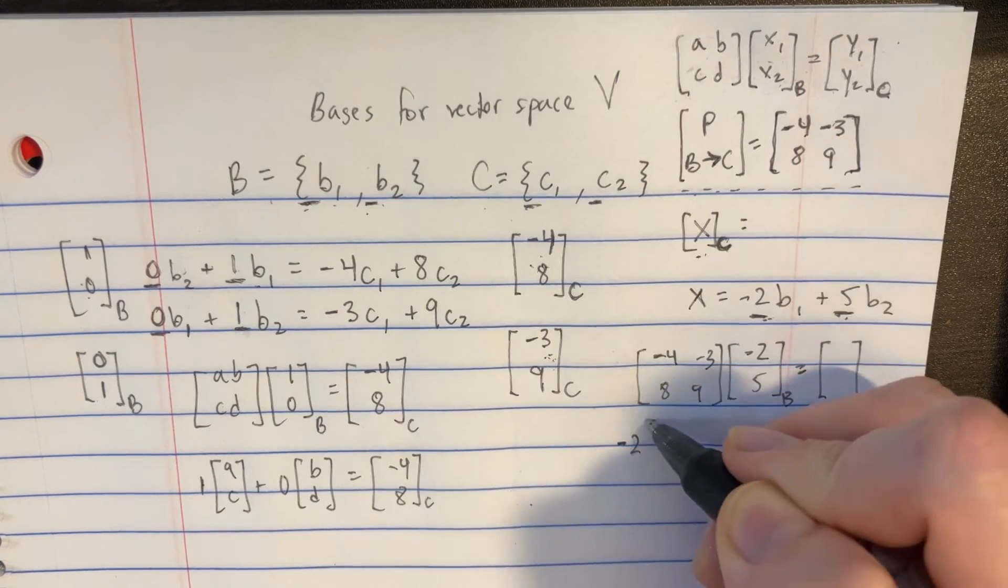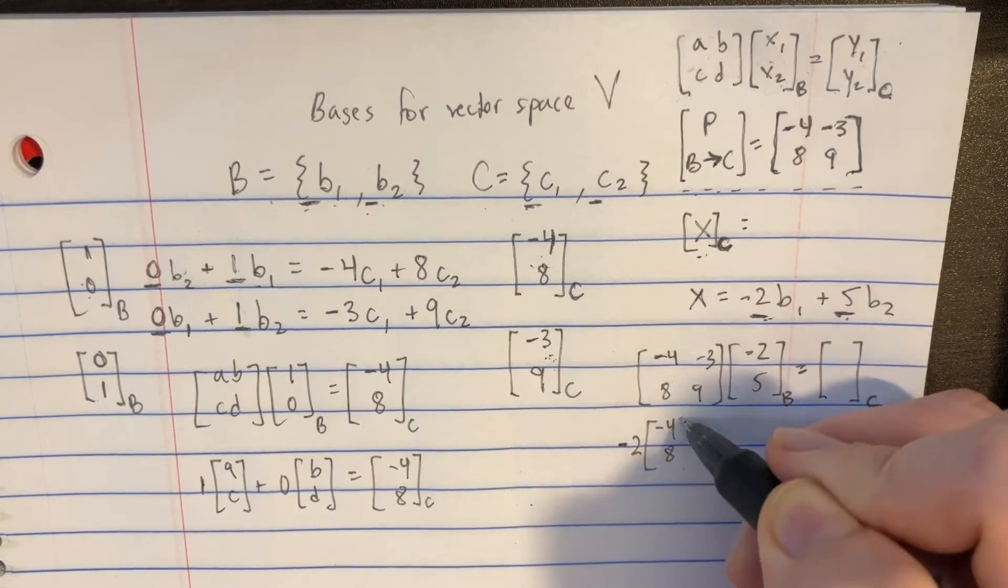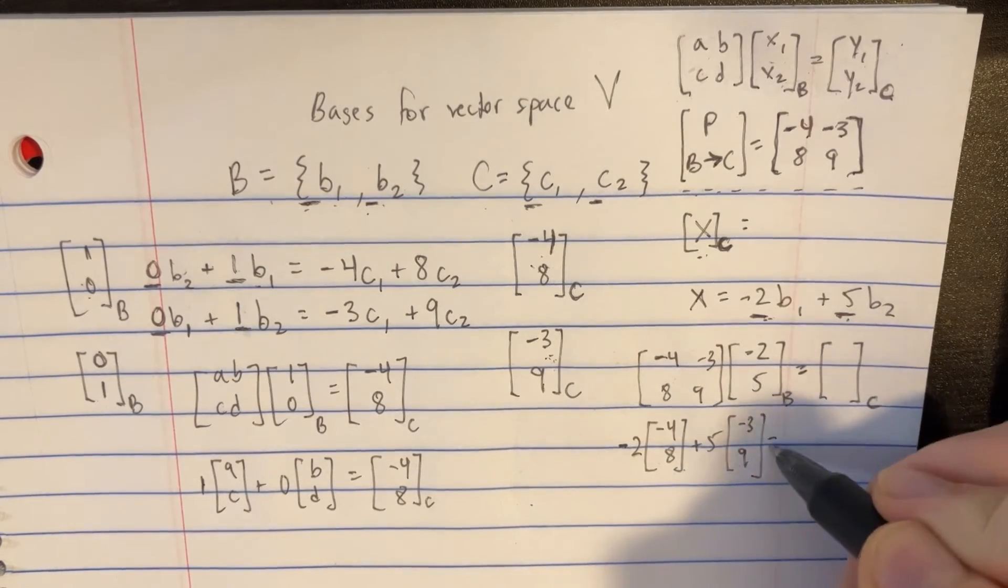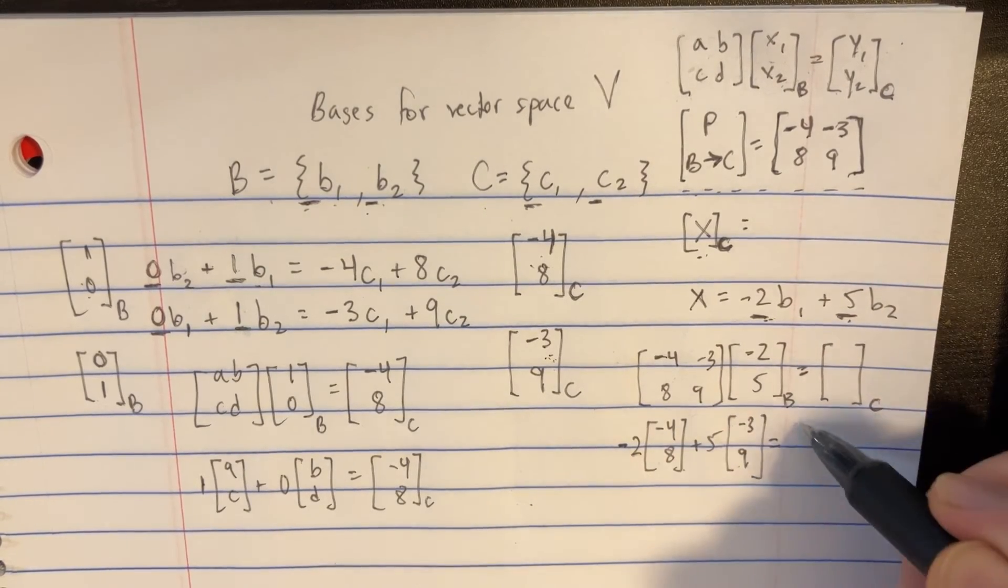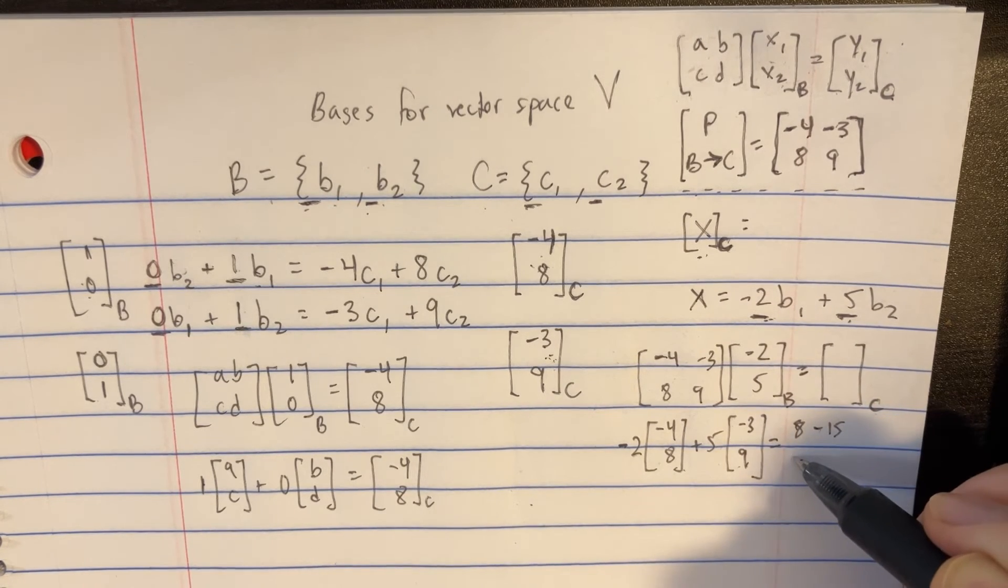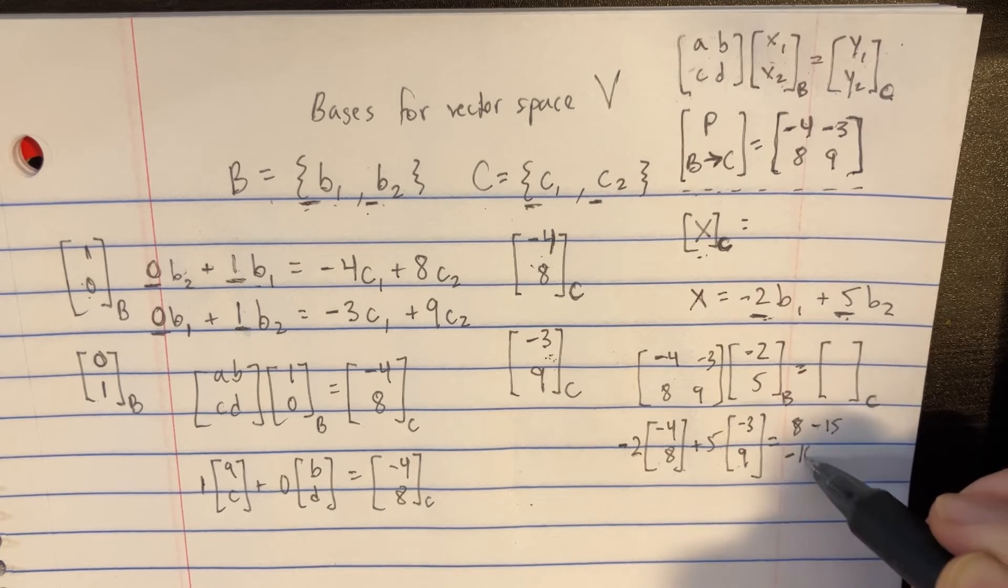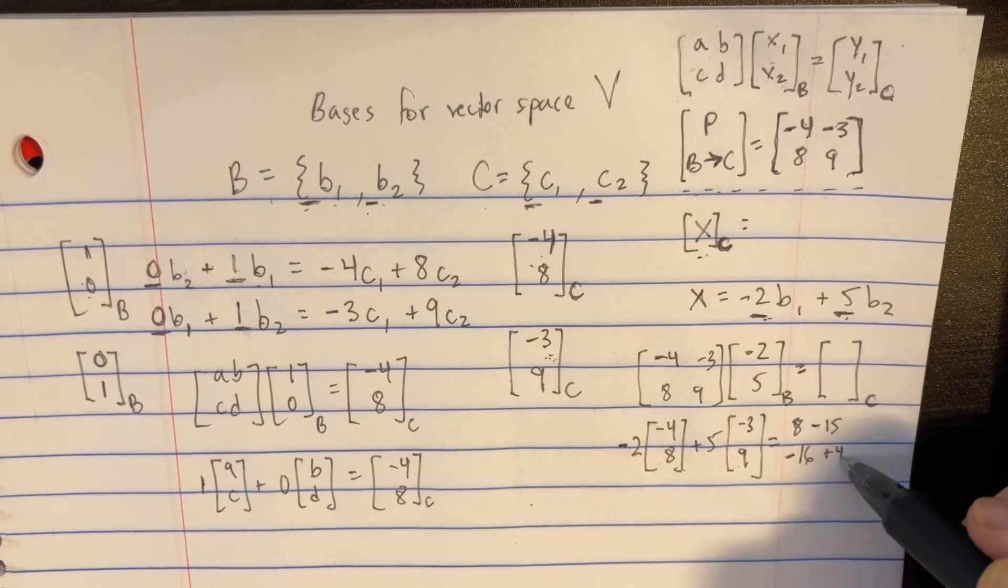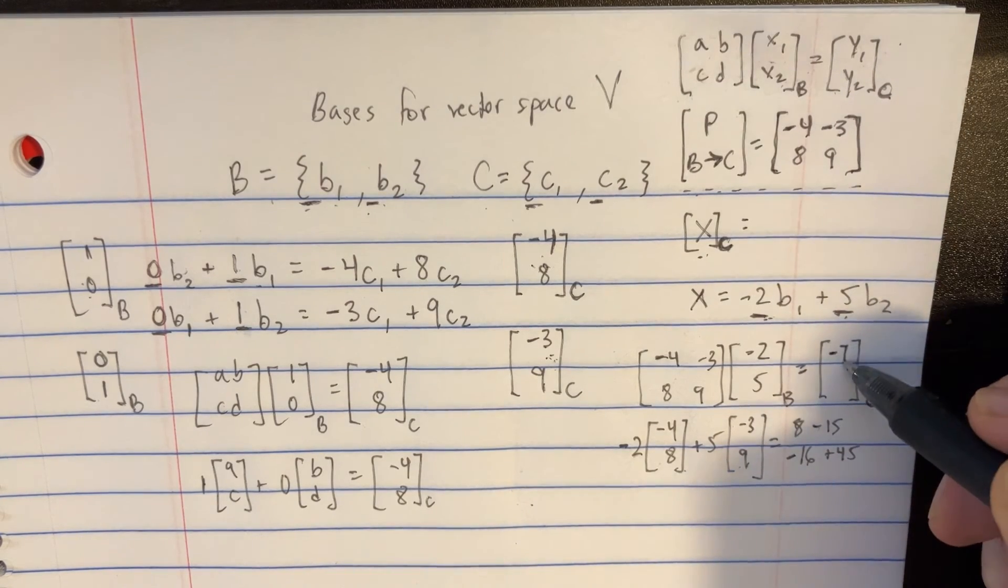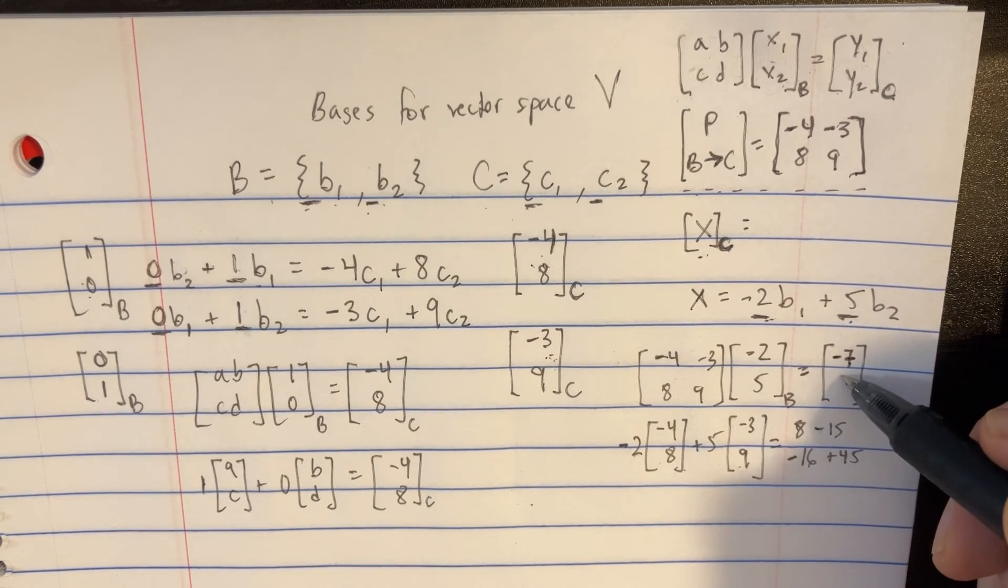If we try to solve this, it's like negative 2 times negative 4, 8, and then plus 5 times negative 3, 9. Let's see what that would be equal to. It would be something like 8 minus 15 on top. And then we would have negative 16 plus 45 on the bottom. So we can go ahead and plug in the numbers. Negative 7 and then 29.